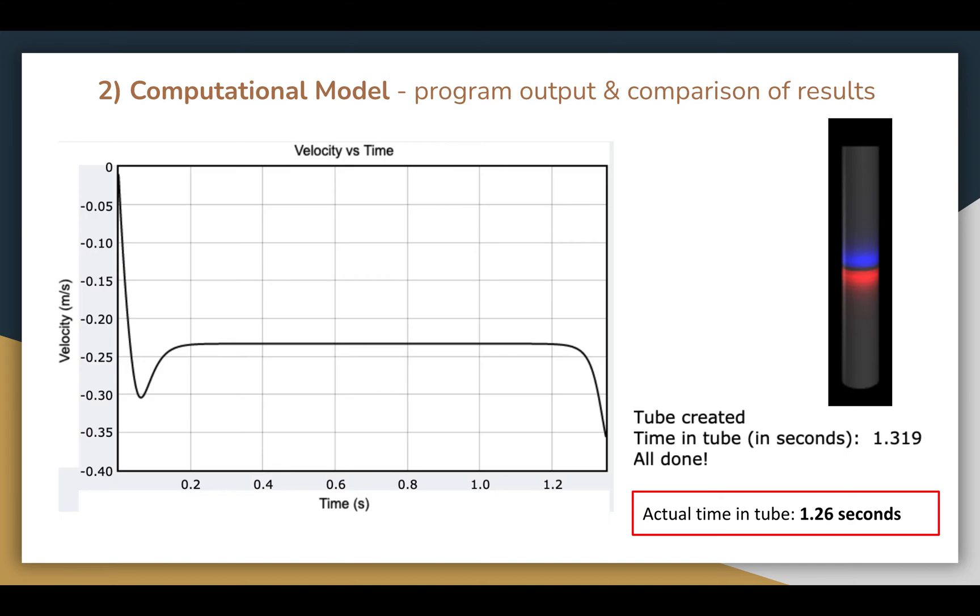So, here is the output of the program, and as we can see, the magnitude of velocity, speed, initially increases before it decreases and settles at roughly 0.23 meters per second for approximately a second, before the magnet reaches the end of the tube and falls through completely. The predicted time taken is 1.32 seconds, and as we mentioned earlier, the actual time taken was 1.26 seconds, averaged over 5 trials.